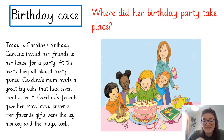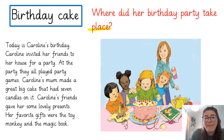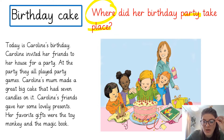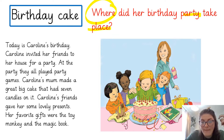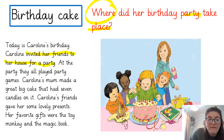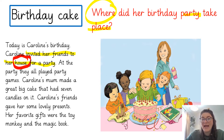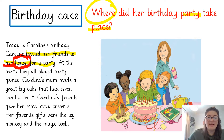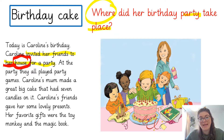Well done. What I would have expected you to be doing there is reading again, looking for the place where her party took place. So I'm going to read and look for where. Caroline invited her friend to her house for a party. So the word you should have found is 'house' — it's her house. So where did her birthday party take place? It took place at her house. I know this because the text says she invited her friend to her house for a party.